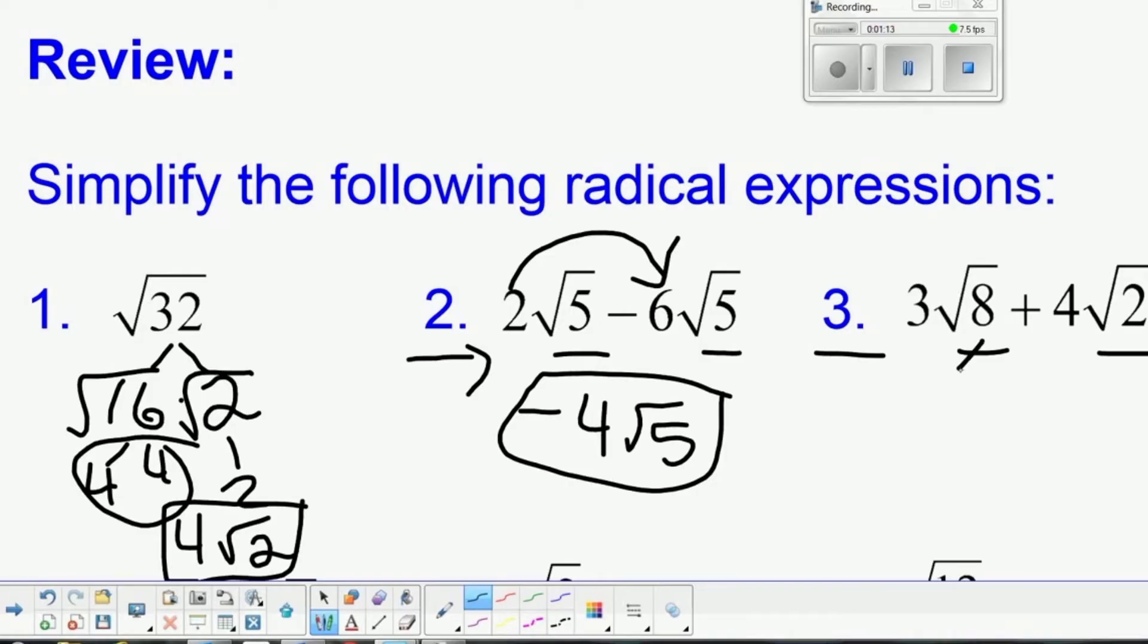8 becomes 2 times 2 times 2, and then we can take out a pair of 2s, so 2 times 3 is 6. We have 6 root 2 plus 4 root 2.